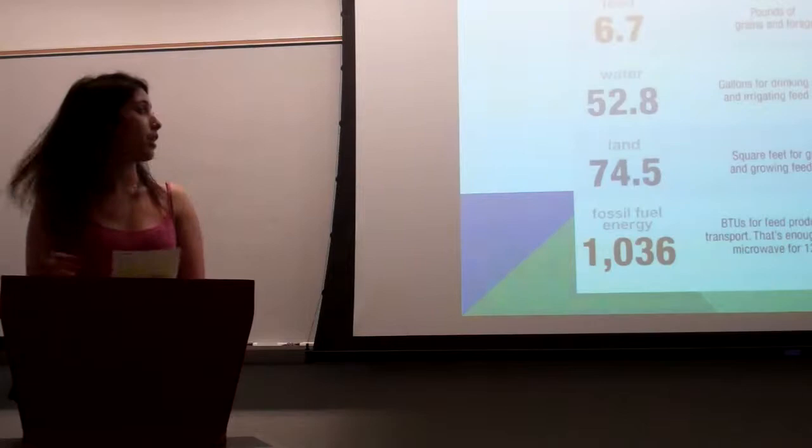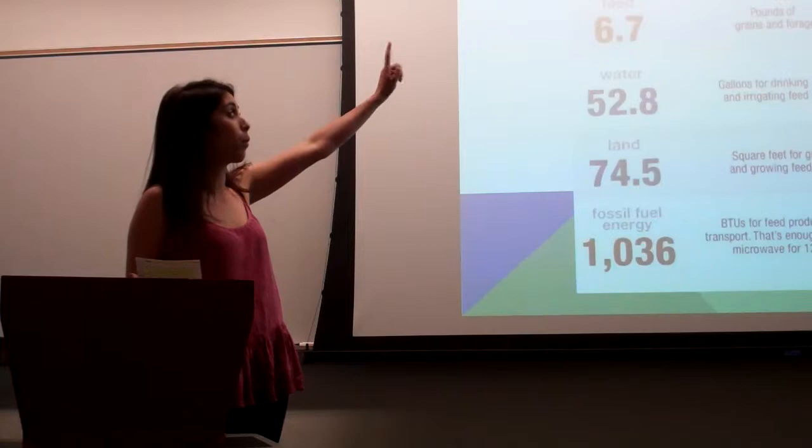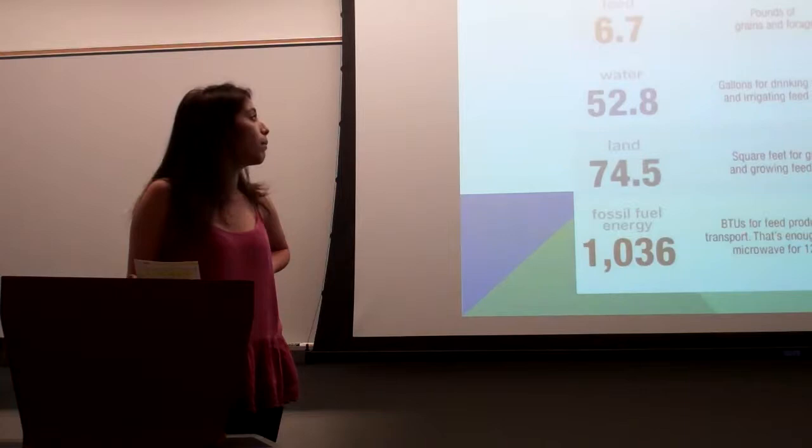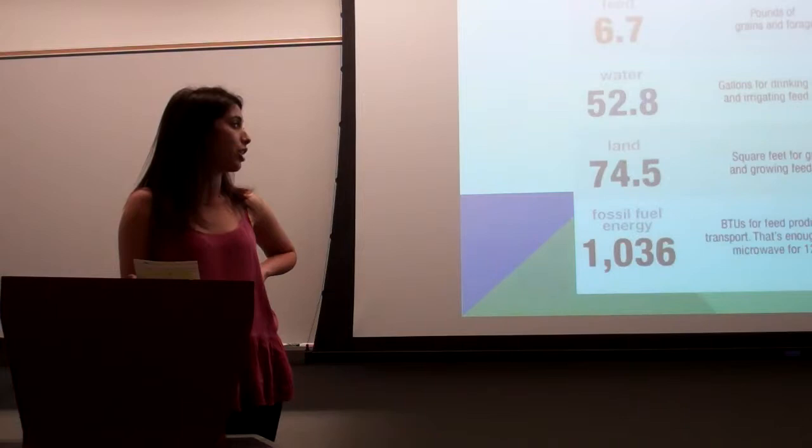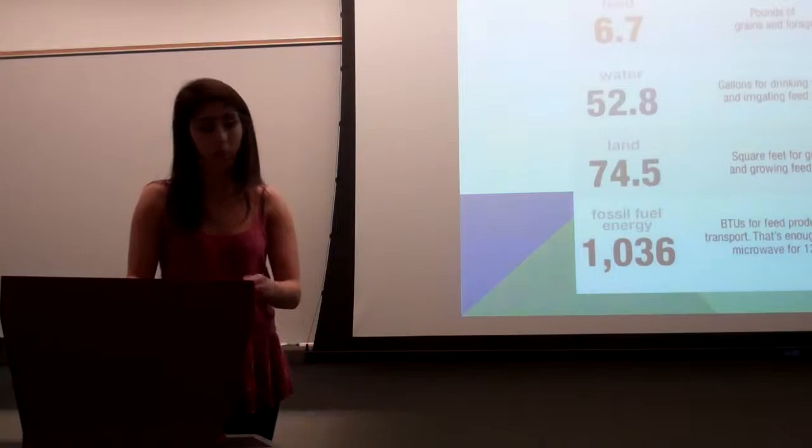And here was another good representation that I found on thinkprogress.org, which is an American political blog for progressive ideas. And to produce just one patty, it takes 6.5 pounds of grain per feed, 52.8 gallons of drinking water for the cattle and irrigation, 74.5 square feet of grazing land, and over a thousand BTUs for feed production and transportation, which is all what has to do with energy.